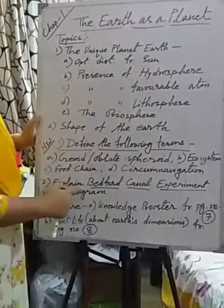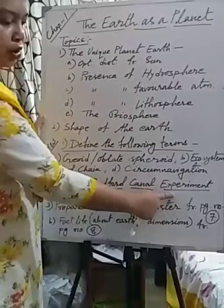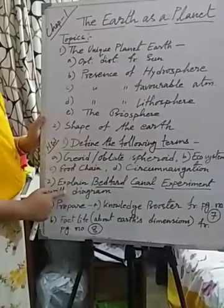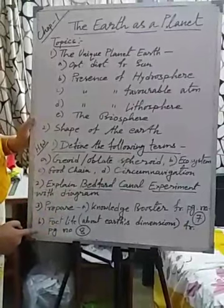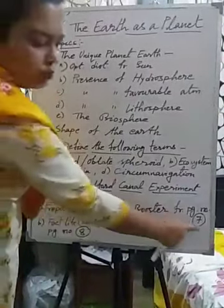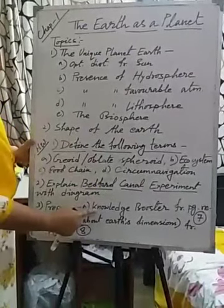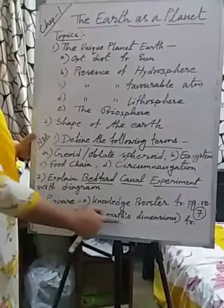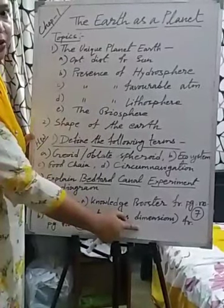Number two: explain the Bedford canal experiment. This is also new for you, but I will explain it. At home you will write up this theory with a diagram after my class. And the last question refers to page numbers seven and eight in your book. There are two things there: one is 'Knowledge Booster' and another is 'Fact File about our Earth's dimension.' You should prepare these two tables — I will ask questions from there.